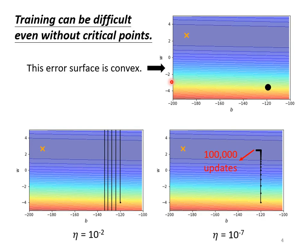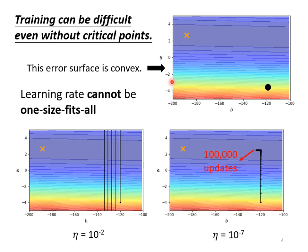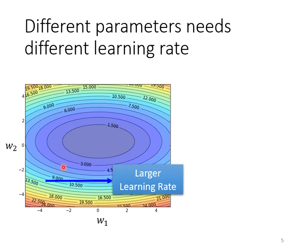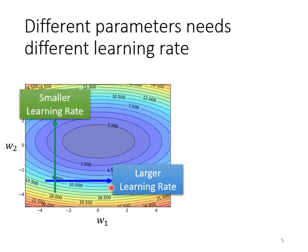In the old version of gradient descent, all parameters have the same learning rate. Obviously this is not enough — every parameter should have a customized learning rate. So now we are going to talk about how to customize learning rates. From the previous example, we can see a fundamental principle: if the gradient is very small in one direction, meaning it is very flat, then we would like to increase the learning rate. If it is very steep in one direction, then we expect the learning rate to be set smaller.